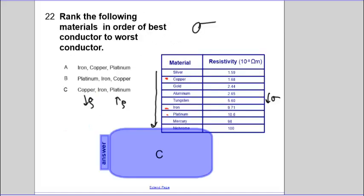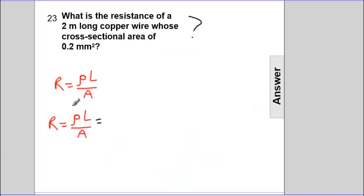This information is tabulated in this data table, and copper has a resistivity of 1.688 times 10 to the negative 8 ohm meters. So that is 1.68 times 10 to the negative 8 ohm meters. So that's the rho value.